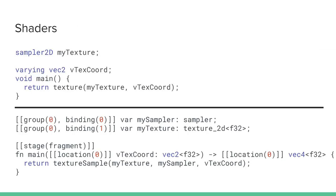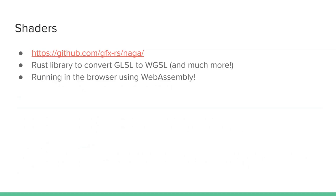Now let's talk about shaders. When I originally started this port, I used SPIR-V shaders by compiling existing GLSL shader code into SPIR-V with glslang. As the spec evolved, browsers are now phasing out support for SPIR-V, and shaders must be written in a new shading language called WGSL. GLSL and WGSL are similar in flow control but WGSL is more verbose. I used a great Rust library called Naga to convert GLSL to WGSL, compiling in the browser just-in-time using Naga and WebAssembly.